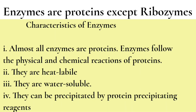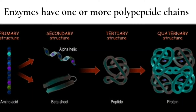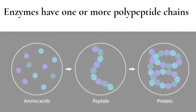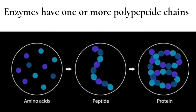We know that most enzymes are proteins — that is, enzymes are protein in nature, except ribozymes. So enzymes are proteins with regard to their chemical nature, and they have one or more polypeptide chains.